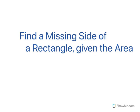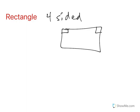Find the missing side of a rectangle given the area. Let's recall that a rectangle is a four-sided figure, not just four sides, but four right angles, and the opposite sides are equal.